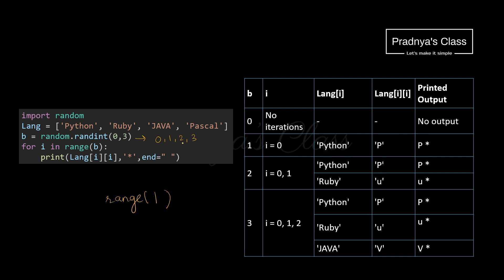Let's consider if B is 2 — range of 2, so values of I will be 0 and 1. At the 0th index we have 'python', and at the first index we have 'Ruby'. For the first iteration, language[0][0] gives us 'P*'. Then for the second iteration, language[1][1] gives us 'U' from the string 'Ruby', so we get 'U*'. In this way, we got the second possible output.